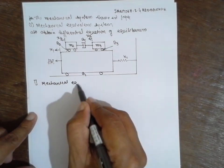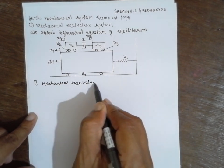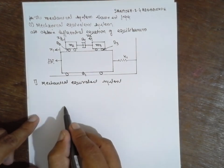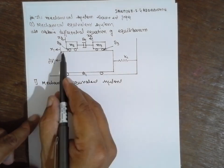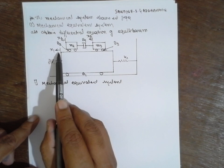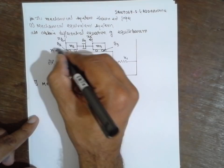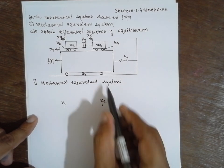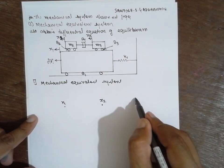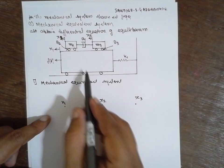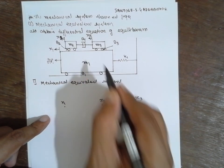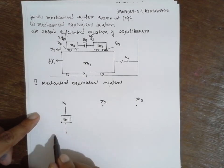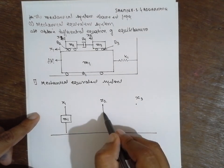First I will focus on the nodes. There is one node here, X1. Next is X3, and this is X2. X1 is connected to mass M1, which is grounded. X2 is mass M2, and X3 is mass M3.